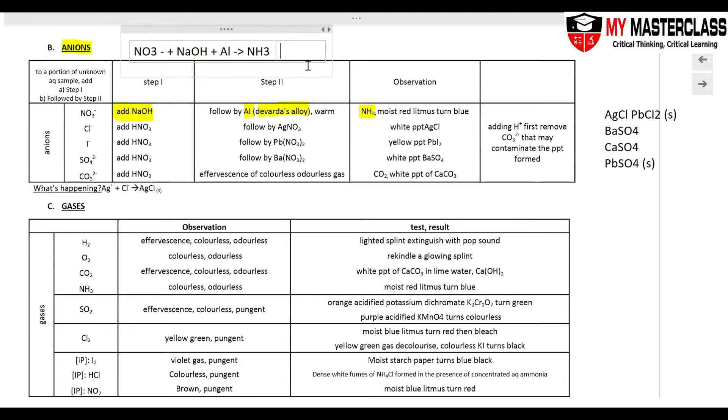The next reaction we will have is the NH4+ whenever you see your ammonium ions plus NaOH, this is going to give me NH3 gas. So the big difference about these two is whether the aluminum metal piece or Devarda's alloy. If I add aluminum, it's going to test for nitrate. If I didn't add, I just add the alkali, it's just going to test for the ammonium ions.